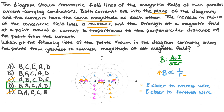With the net magnetic field at point E being larger than the net magnetic field at point B, our final answer will be choice D: the magnitude from greatest to smallest of the net magnetic field is E, B, C, A, D.